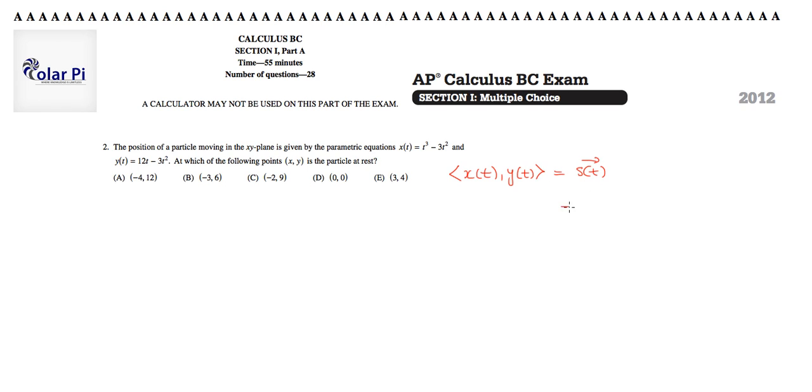Then we know that velocity, v of t, has to be the component's derivative, so it's got to be x prime of t comma y prime of t.